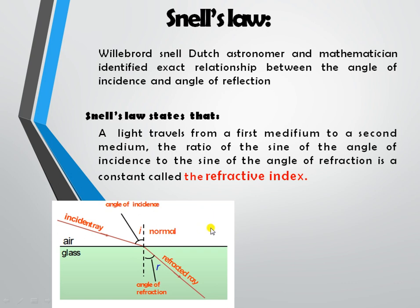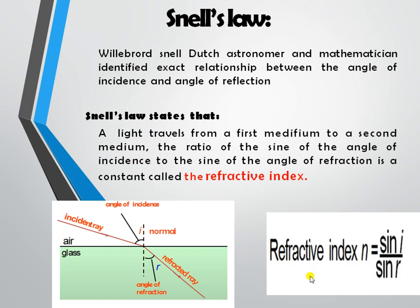In the diagram, this is your first medium and this is your second medium. Your incident ray falls on the boundary and changes its path. This is your angle of incidence — the angle formed by the light to the normal line. This is your angle of refraction. As per Snell's law, refractive index N equals sine of angle I divided by sine of angle R, which is always constant for two mediums.